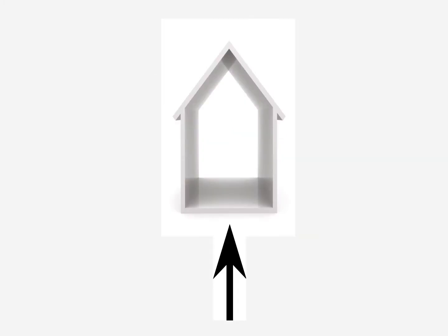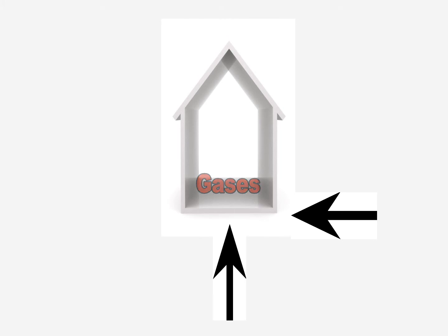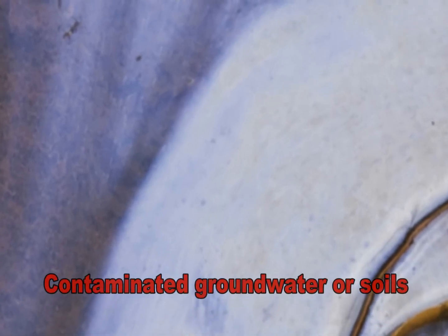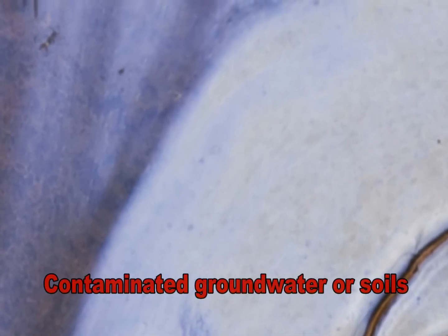Vapor intrusion is the process by which chemicals migrate to the indoor air above a contaminated site. Vapor intrusion generally occurs when there is movement of volatile chemicals from contaminated groundwater or soil into an overlying building.